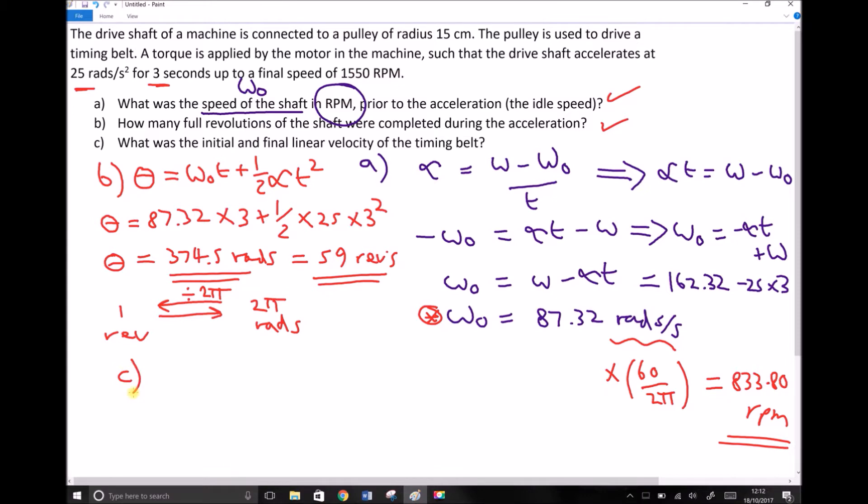And the final part asks us what was the initial and final linear velocity of the timing belt. Now if you recall, we've got a pulley that's rotating. So in the top right hand corner, we've got a circular pulley, which is rotating. And as it rotates, it's driving a timing belt.